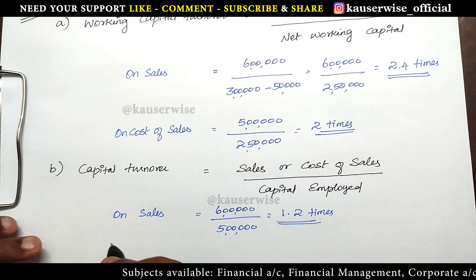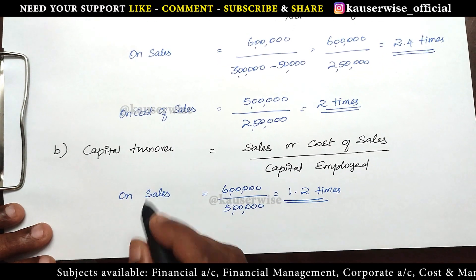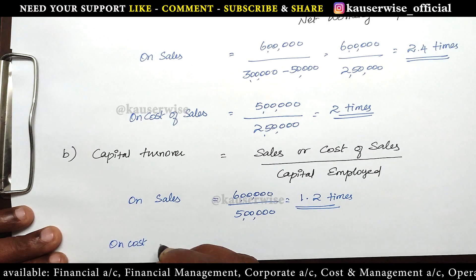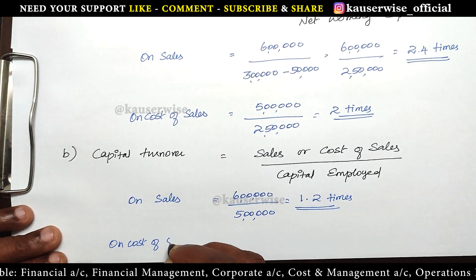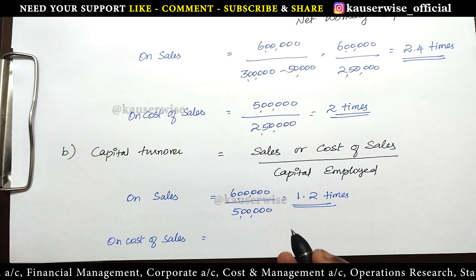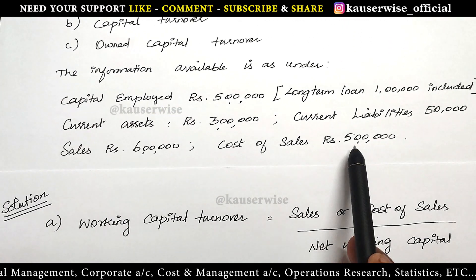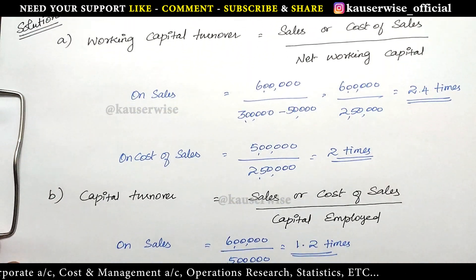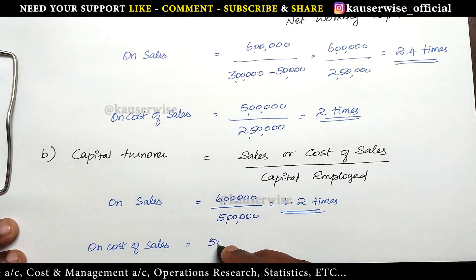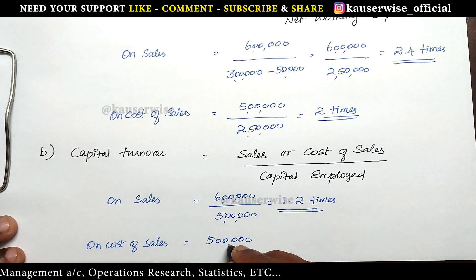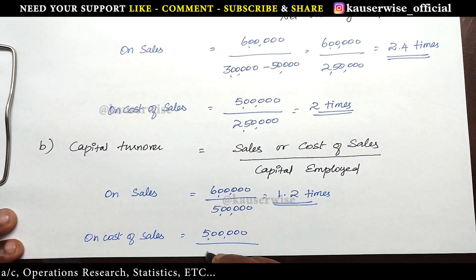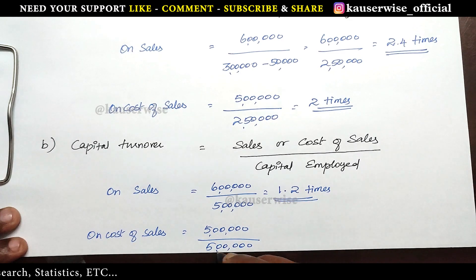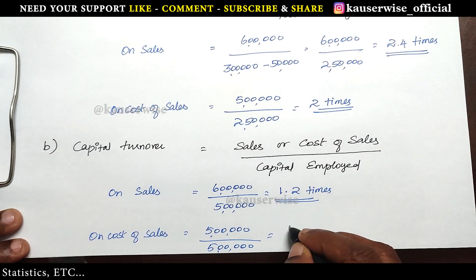In the same way we are going to find out the capital turnover ratio on cost of sales: 5 lakh cost of sales divided by capital employed 5 lakh. The answer is 1 time.